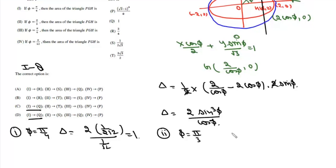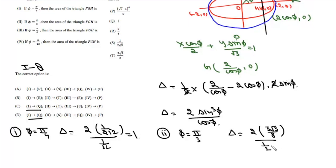For the second case, φ = π/3. The area Δ = 2 × (√3/2)³ / (1/2) = 2 × (3√3/8) / (1/2) = 3√3/2. So the second case matches T.